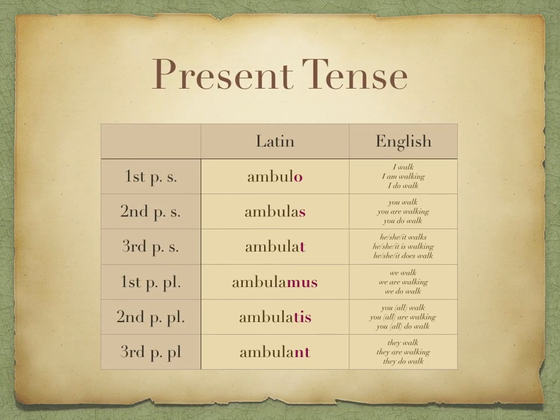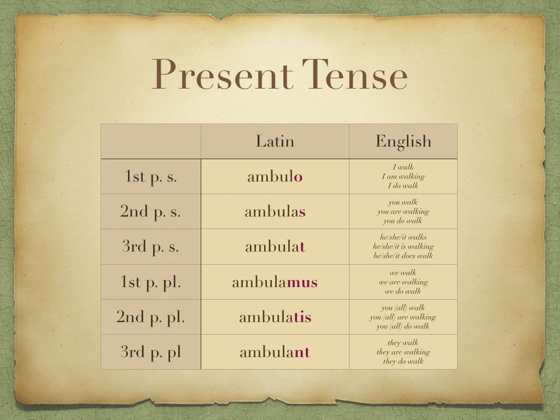So now for our endings — we should know these well off by heart by now. The present tense endings, o-s-t, mus-tis-nt, can be translated in a number of different ways in English. So ambulo can mean 'I walk', 'I am walking', or 'I do walk'. But in Latin, it's just one and the same.